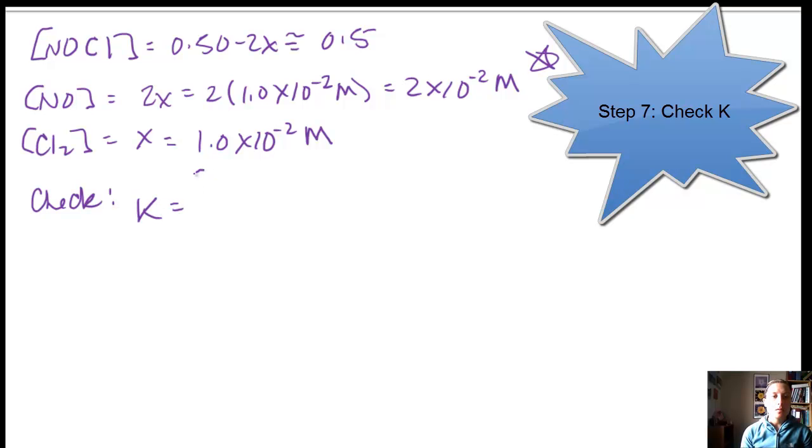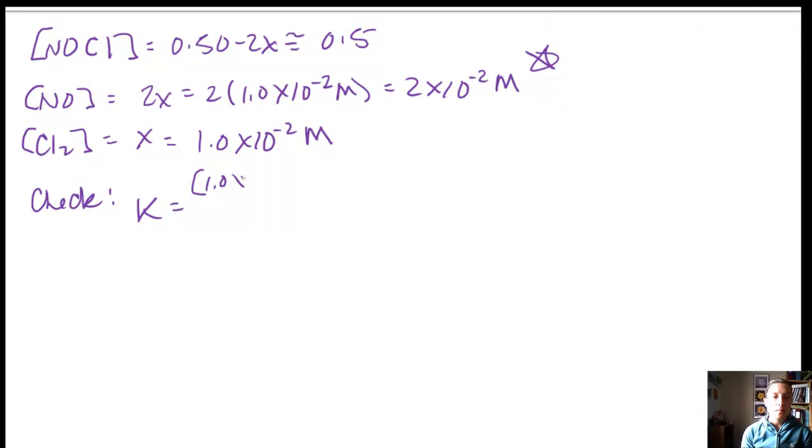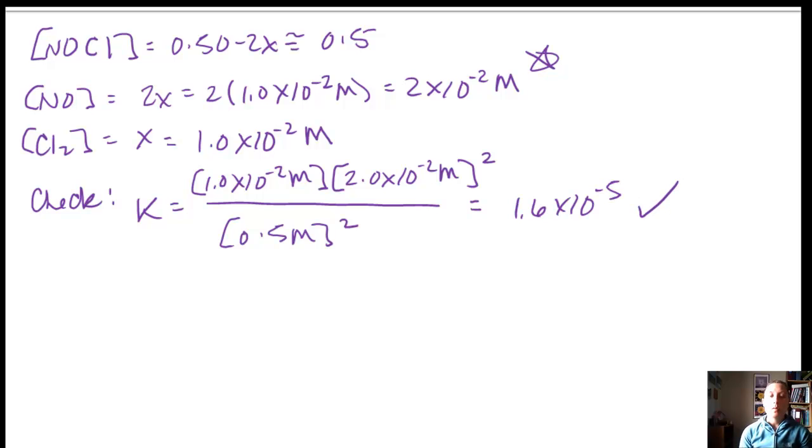Now let's check using the value of K. We know K was equal to the product concentrations, which was Cl2 times the concentration of NO squared. So that's 2 times 10 to the negative 2 squared divided by the concentration of NOCl. And that one was also squared. And we get a value of 1.6 times 10 to the negative 5. And so we're good.